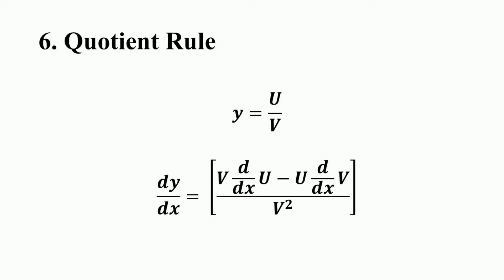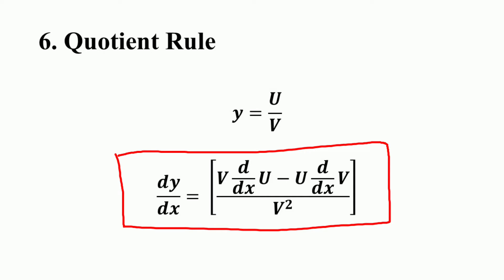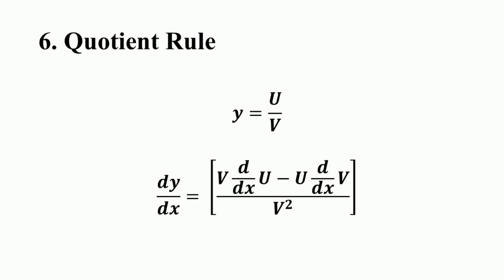That means the quotient rule of differentiation says that if we have two functions u and v, both differentiable, and y = u/v, then the derivative dy/dx equals v times the derivative of numerator u, minus the numerator u times the derivative of denominator v, whole divided by the denominator v squared. This is the quotient rule of differentiation.